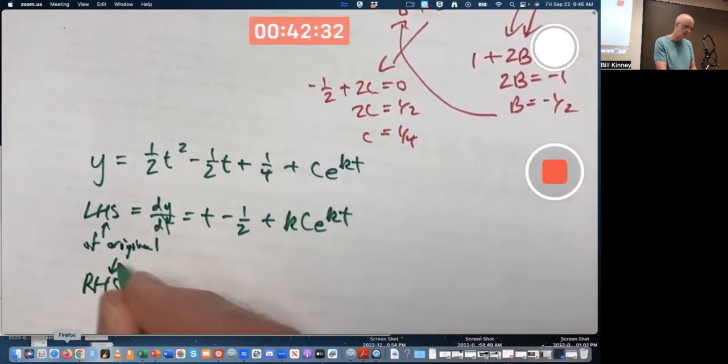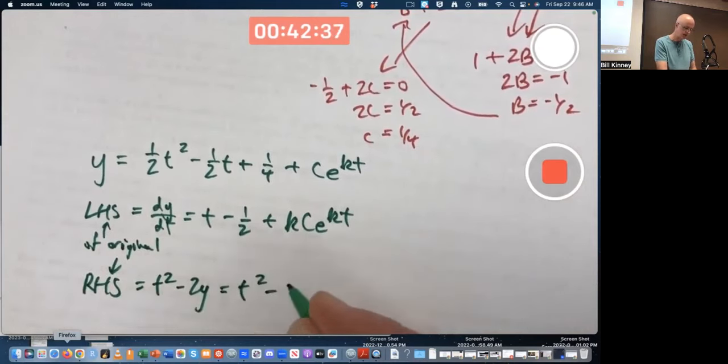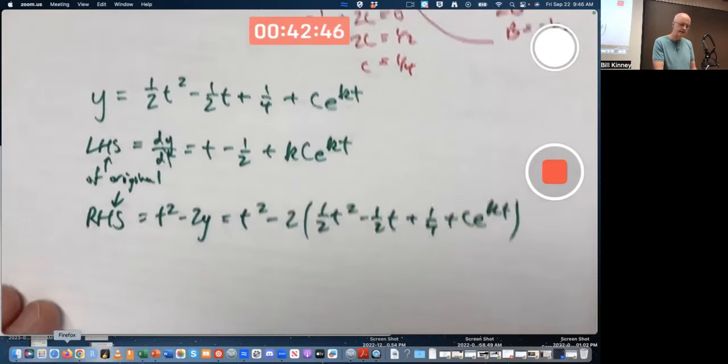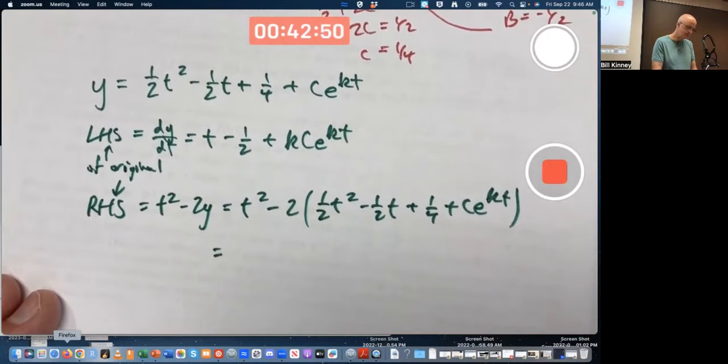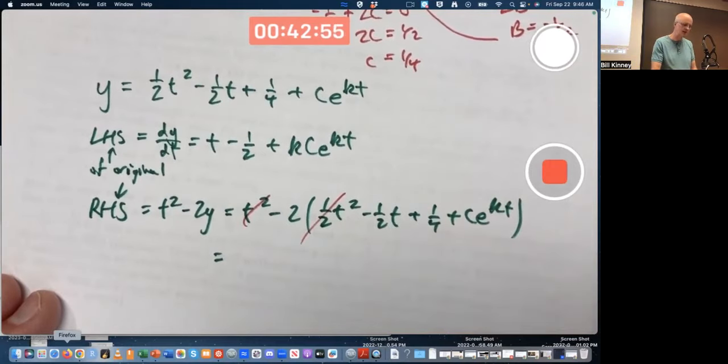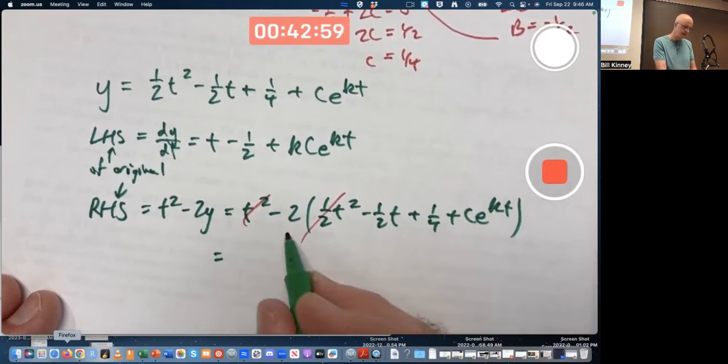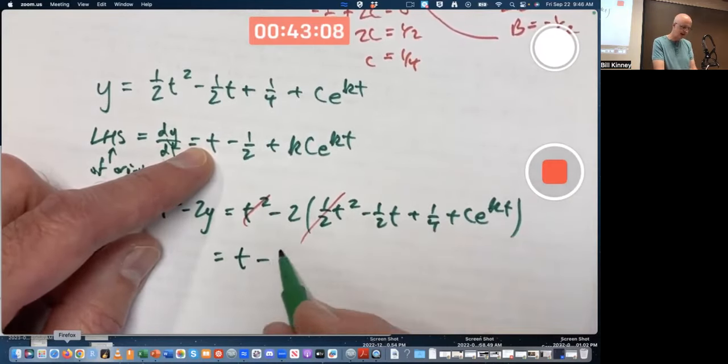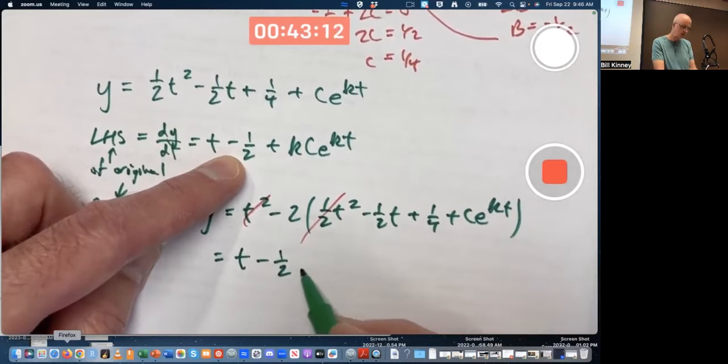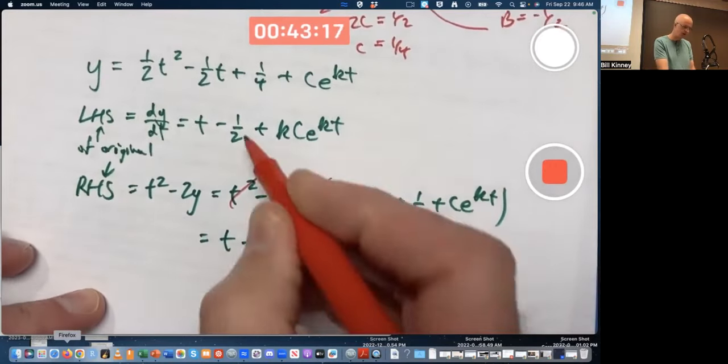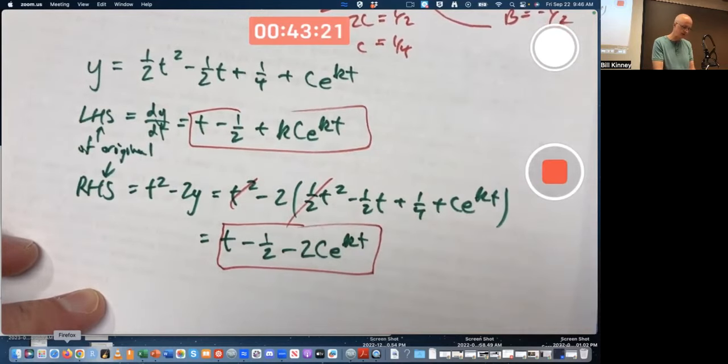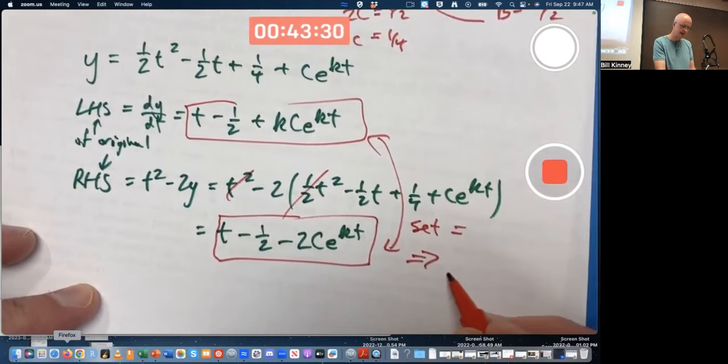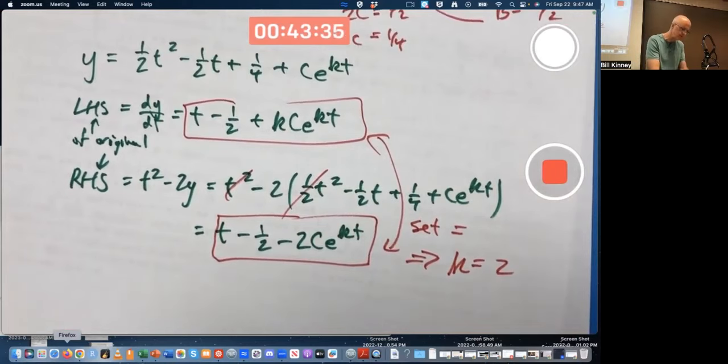But the right-hand side of the original, it's t squared minus 2y. t squared minus 2 times all this. Simplify. The t squared terms cancel. Right? Because 2 times one-half is 1. Negative 2 times one-half is negative 1. The t term is negative 2 times negative one-half times t is positive t. That looks good. Negative 2 times one-fourth is minus one-half. That looks good. What's left? I got a negative 2ce to the kt. Question is, what value of k will make these two functions always equal to each other? Set equal, that implies k is negative 2. Sorry. Negative 2.